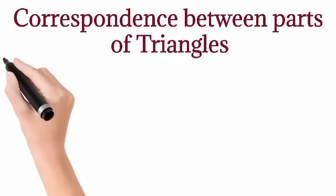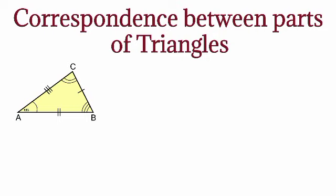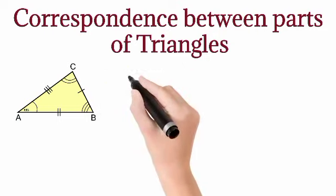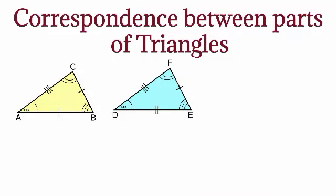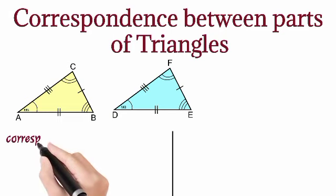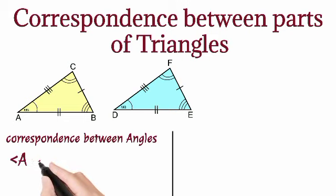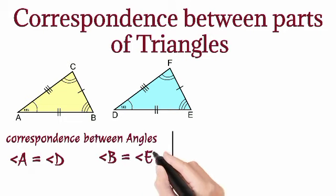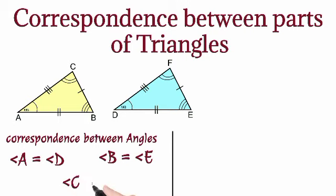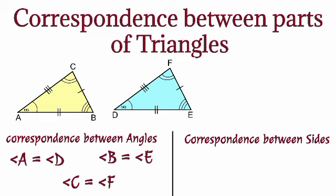For that, I will discuss about the correspondence between the parts of triangles. First of all, I will discuss about the correspondence between the angles. So, let's see if we have angles - angle C and angle F are equal. So this is the correspondence between angles.